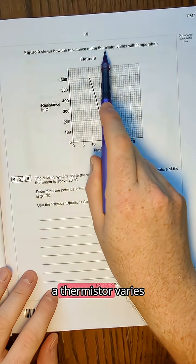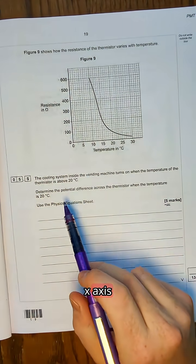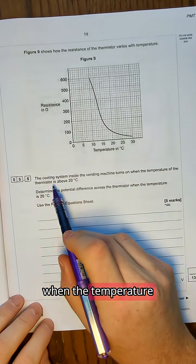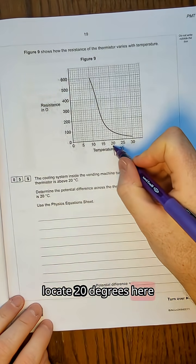It shows how resistance of a thermistor varies with temperature. We've got resistance on the y-axis, temperature on the x-axis, and it says that the system turns on when the temperature of the thermistor is above 20 degrees. So we can locate 20 degrees here, we're going to use that later.